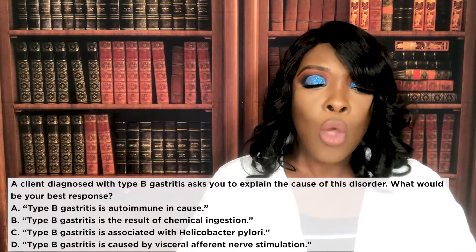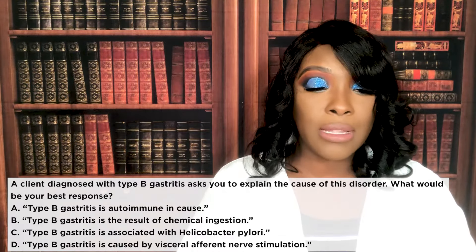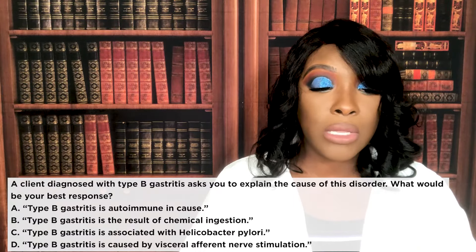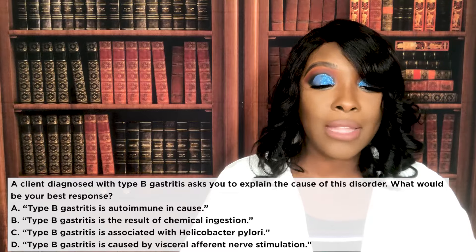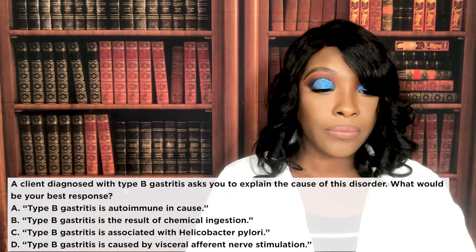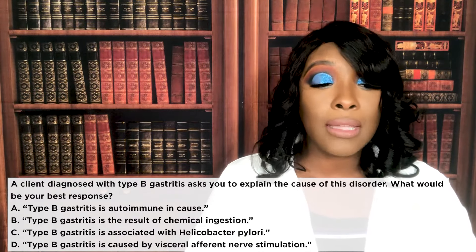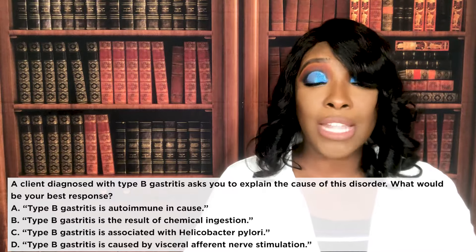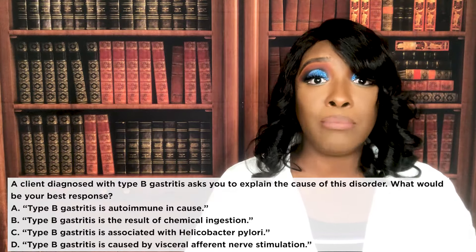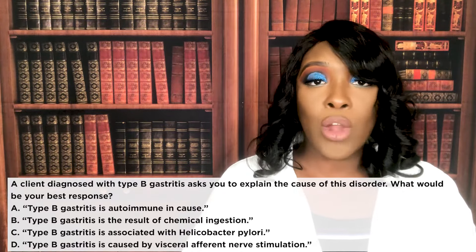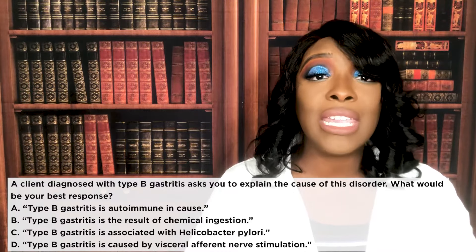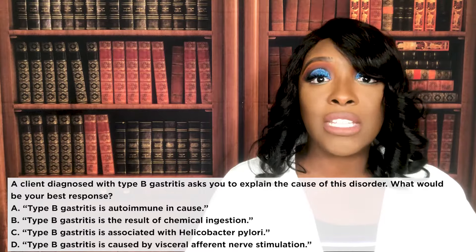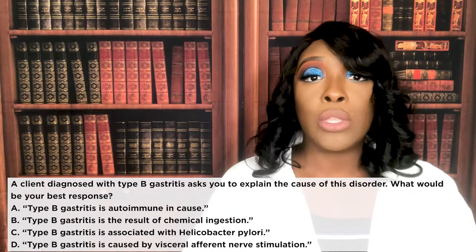Next question: A client diagnosed with type B gastritis asks you to explain the cause of this disorder. The correct answer is C — type B gastritis is associated with H. pylori, a gram-negative bacteria. For a patient with type B gastritis, in addition to a PPI or H2 blocker, the patient will also need an antibiotic because H. pylori is a gram-negative organism.